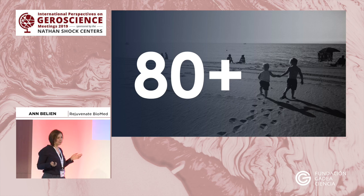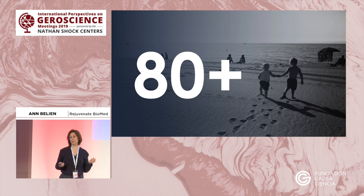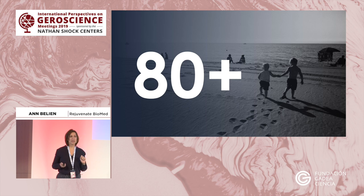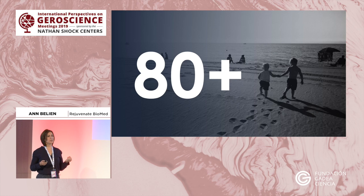As we all know, we're all living longer today than ever before. A child born today can become 80 years — that's double from just a century ago — and it's really due to all the additional things that we know we need to do: clean water, vaccines, and medication.